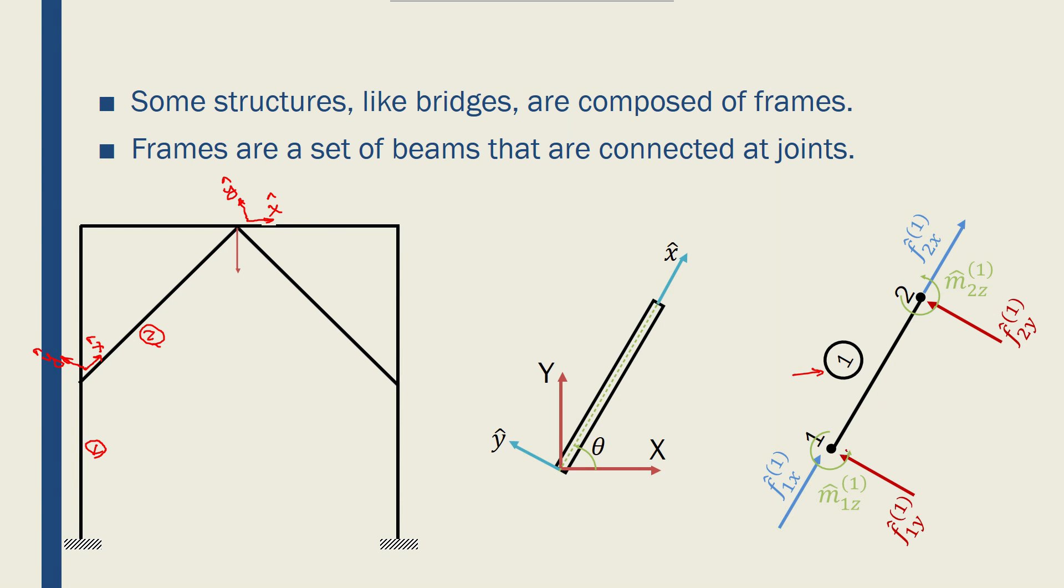So each node has three degrees of freedom and each element has two nodes and again each element will have its own global and local coordinate system.